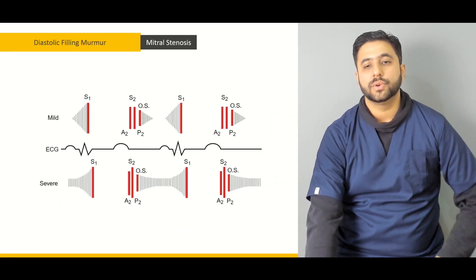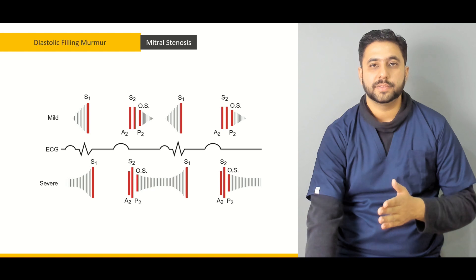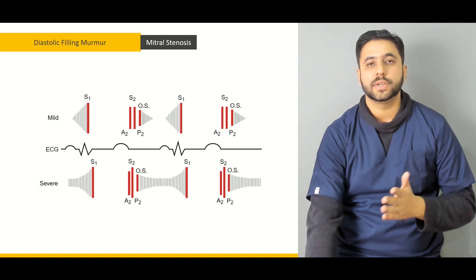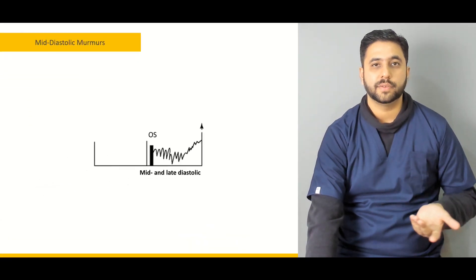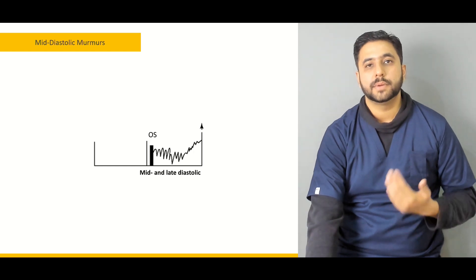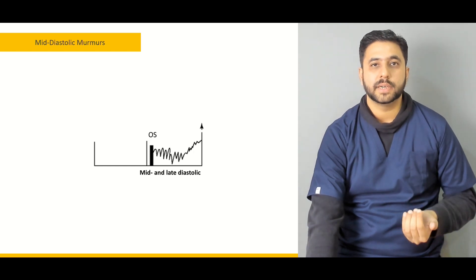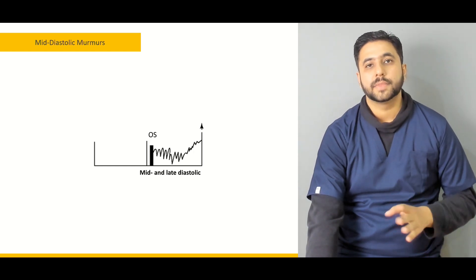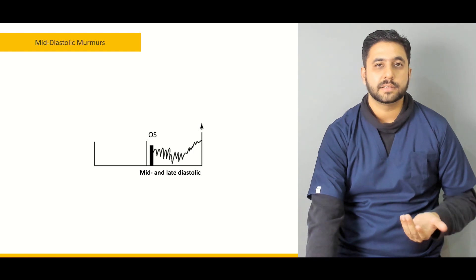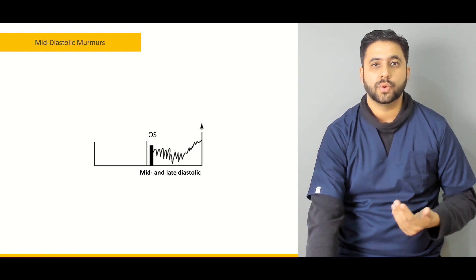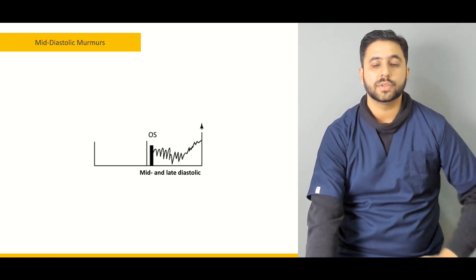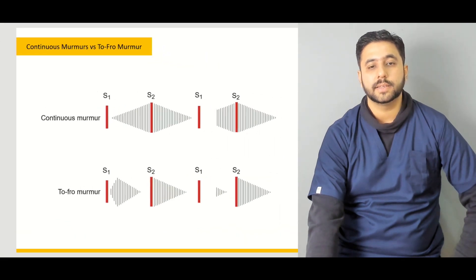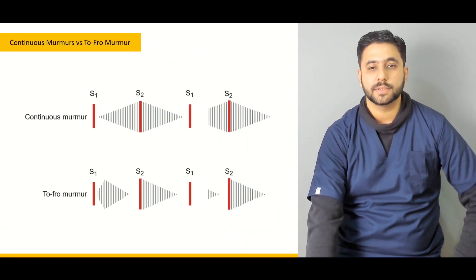Similarly, we are going to proceed further and go through the discussion of the mid-diastolic murmurs — for example, the murmur of mitral stenosis, what happens with that murmur, how this murmur is affected by the various processes going on, and what are the various diseases that can lead to this mitral stenosis murmur or other mid-diastolic murmurs.